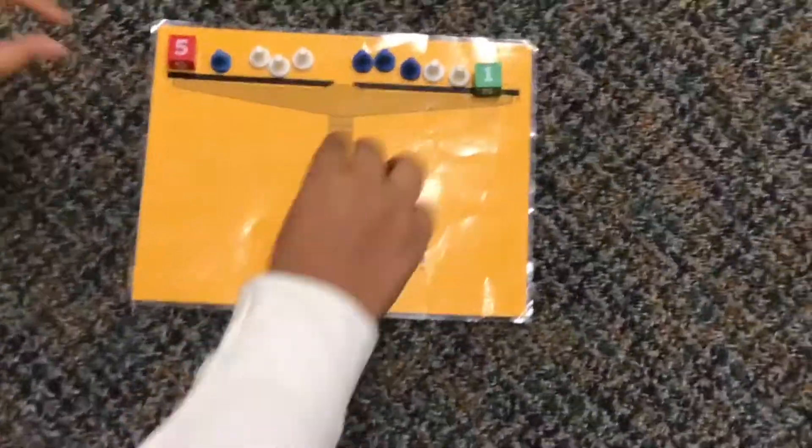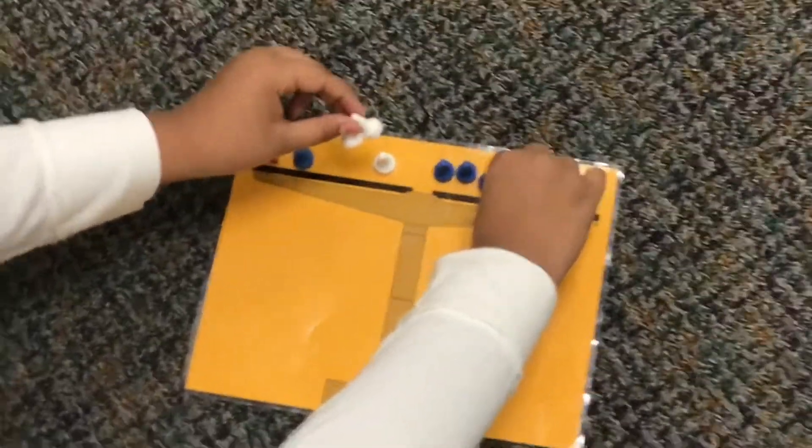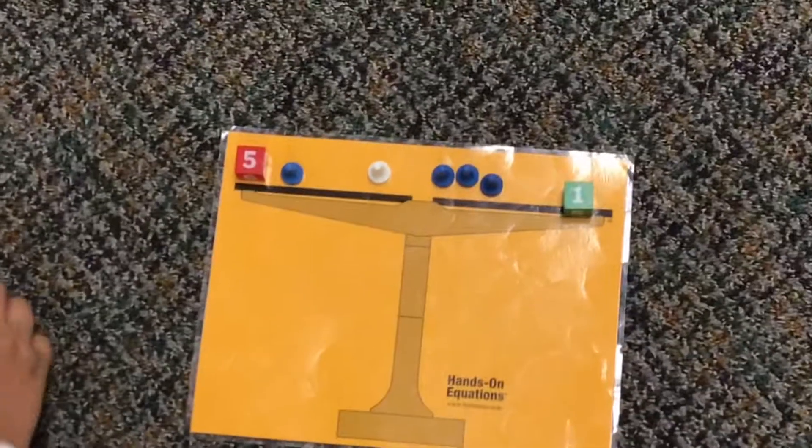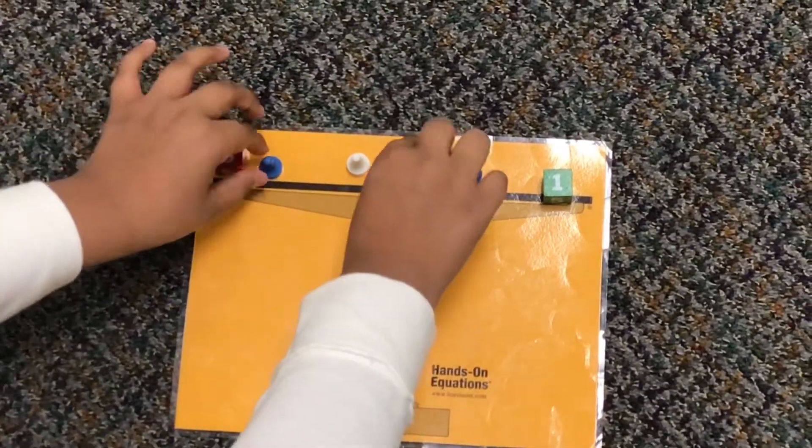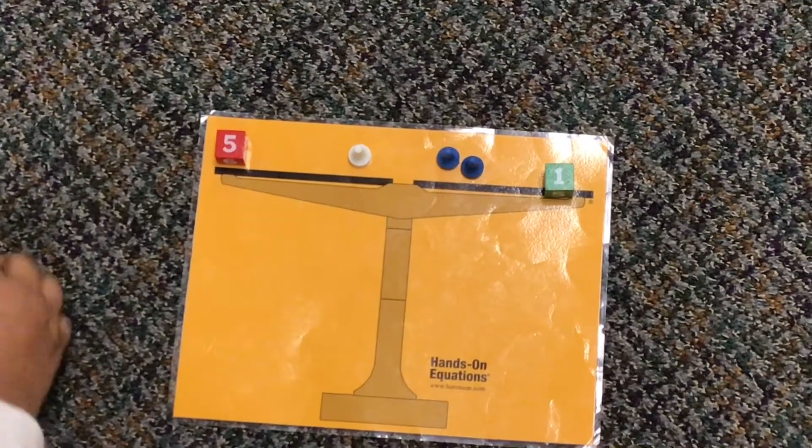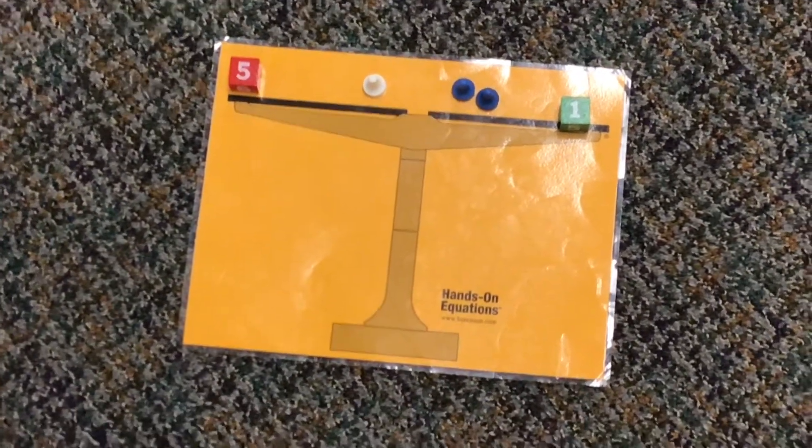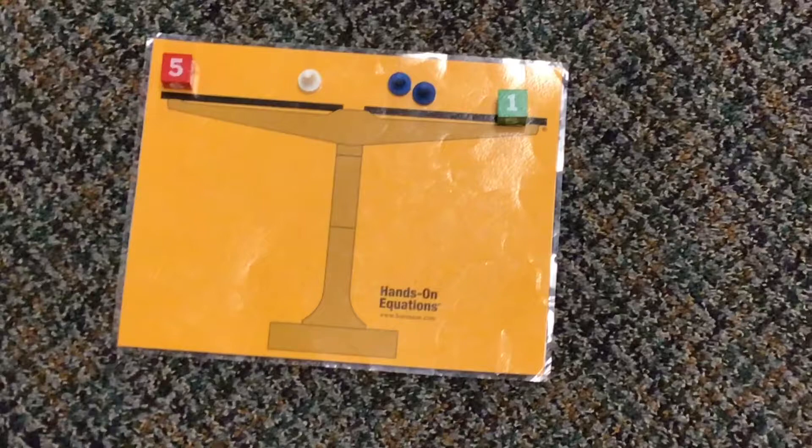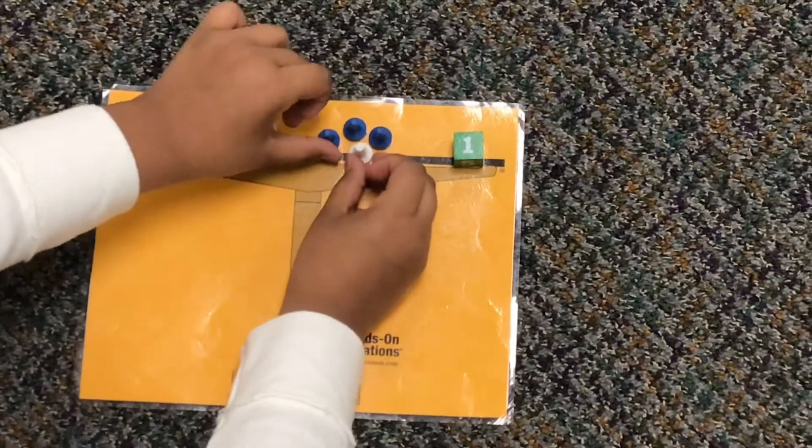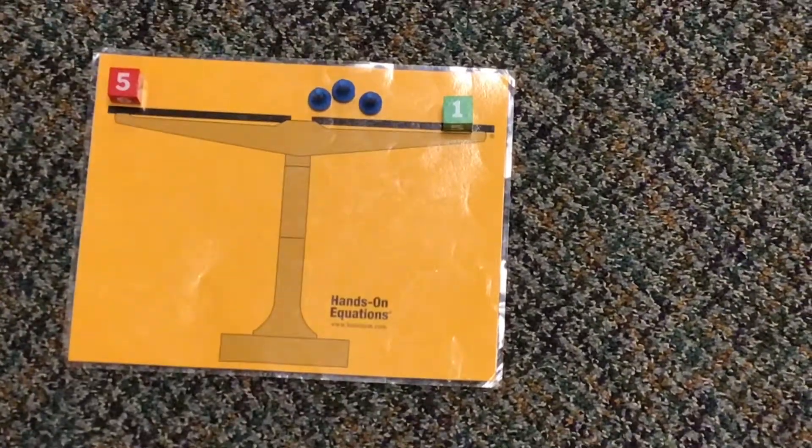This is my setup. The first thing I'm going to do is take away two white pawns from both sides. Then I'm going to take away two blue pawns from each side. And then I'm going to add a pair of zero to this side so I can take away these two pawns.